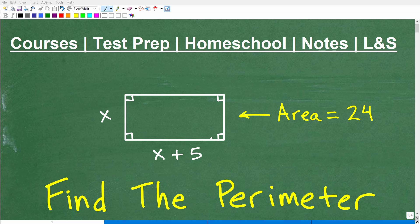Okay, so what do we have here? We have a rectangle and we want to find the perimeter of this particular rectangle. We're told that the area of the rectangle is 24. I'm going to give you a hint here. You can probably see the hint in the title of this video, but this will involve a quadratic equation.